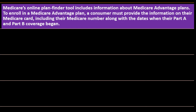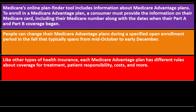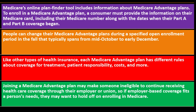Medicare's online plan finder tool includes information about Medicare Advantage plans. To enroll, a consumer must provide information from their Medicare card, including their Medicare number and the dates when their Part A and Part B coverage began. People can change their Medicare Advantage plans during a specified open enrollment period in the fall, typically spanning from mid-October to early December. Each Medicare Advantage plan has different rules about coverage for treatment, patient responsibility, costs, and more. Joining a Medicare Advantage plan may make someone ineligible to continue receiving health care coverage through their employer or union.